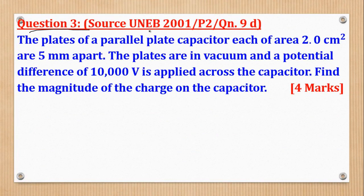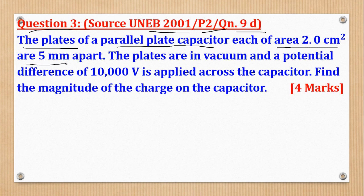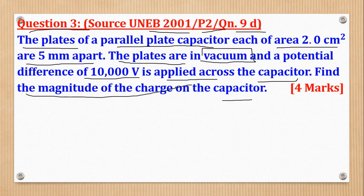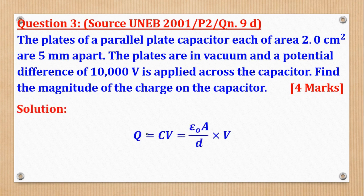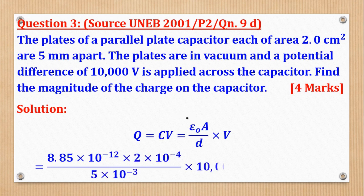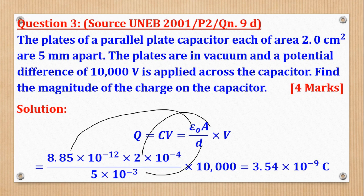Then question 3 came from UNEB 2001, paper 2, question 9, part ii, and says, the plates of a parallel plate capacitor, each of area 2cm squared, and 5mm apart. The plates are in vacuum, note this word vacuum, and a potential difference of 10,000 volts is applied across the capacitor. Find the magnitude of the charge on the plate, on the capacitor. So still, we shall use the same formula, Q is equal to CV where C is this. And with that, we shall substitute. Substitute for the constant, substitute for the area, substitute for the separation, and then substitute for the PD. When that is done, you'll use the calculator and come up with this as the charge they wanted in Coulombs.